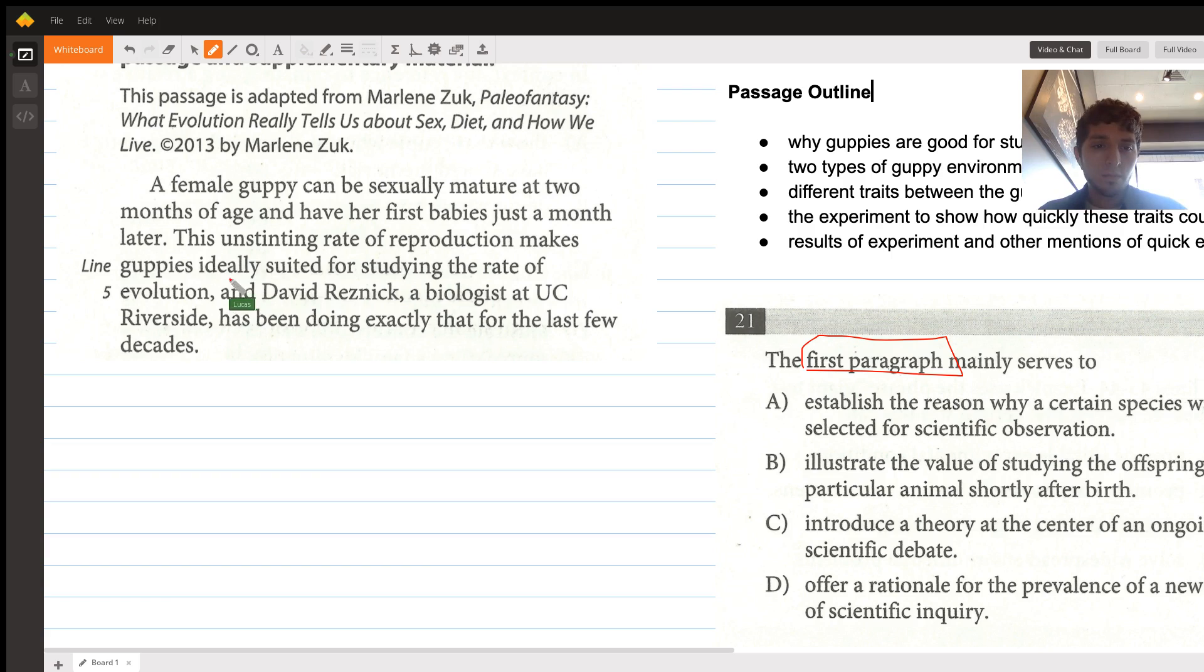So what this does is tell us about guppies—something unique about them. They're sexually mature at two months of age and have their babies just a month later, which means they're reproducing so fast. This makes them ideally suited for studying the rate of evolution because they're able to evolve at such a rapid pace, and this is exactly what David Resnick has been doing.